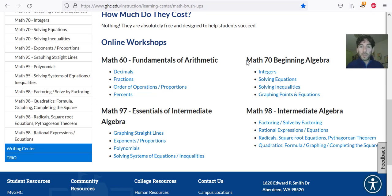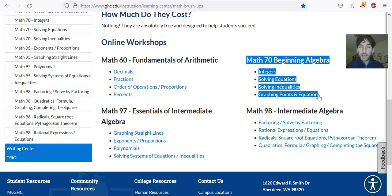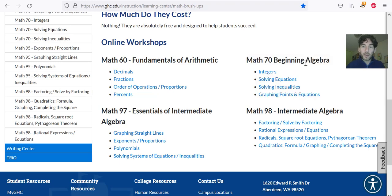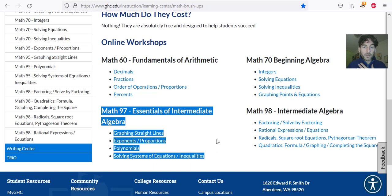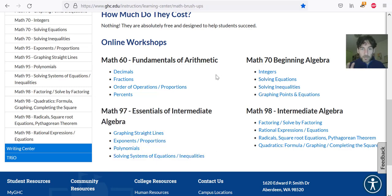For example, you could be placed into Math 70, you could do all of the lessons for the Math 70 brush-ups here, and then you can tell me hey I'm fine with that, I want to take Math 97. I could give you permission to join Math 97 this term. So please avail of the math brush-ups.